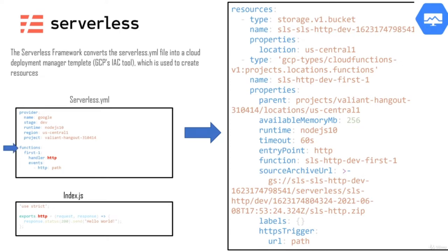The second thing is the function. Each function will always have a name — in this case, 'first one'. The event for this function is an HTTP event, so it will be triggered by an HTTP URL. There is also a handler, which points to the code that resides in index.js. Every time this application is deployed, it converts the serverless.yaml and index.js into a cloud deployment manager template.